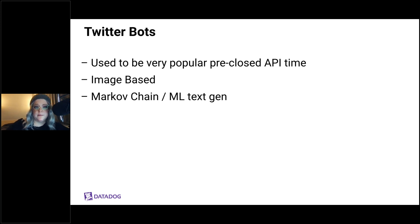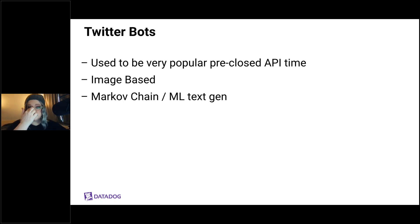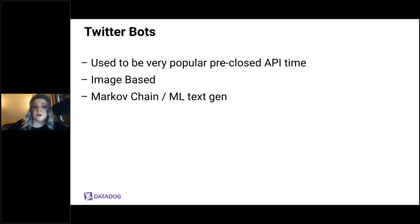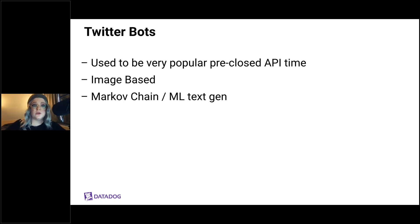Twitter bots used to be really popular before Twitter required a developer account to access their API. There are usually two different kinds: generative image bots, and text-based bots that tweet out random words or Markov chain data from various corpora. It was a great way for less technical people to get hands on with code. We're using Twitter bots for this example because, while you'd typically use serverless functions in a much larger ecosystem, building a bot with multiple API calls will give us a service map and traces throughout.